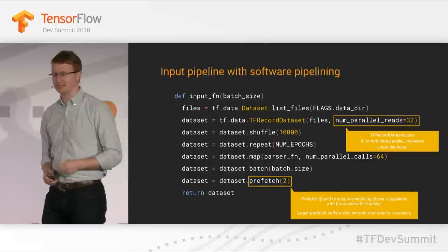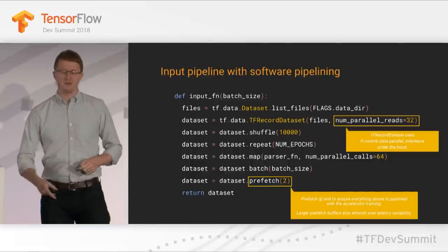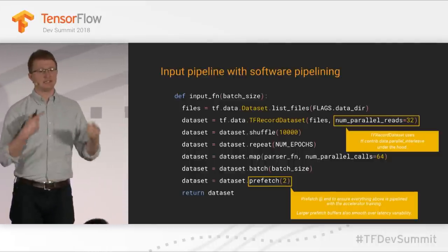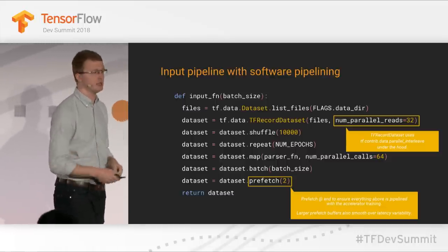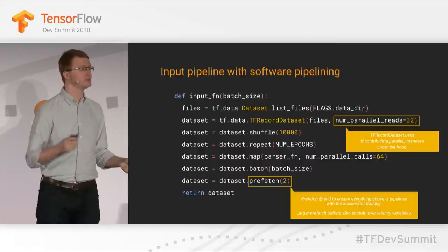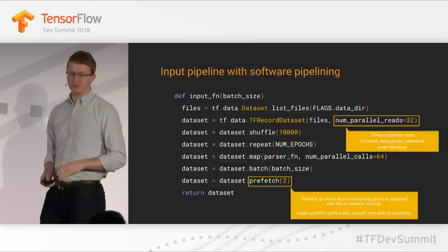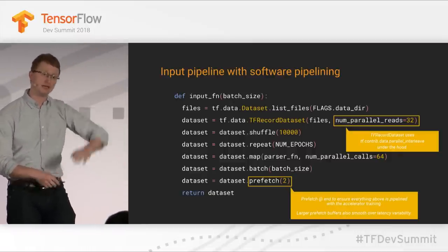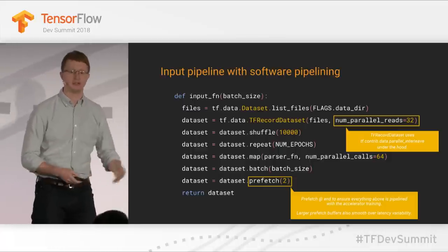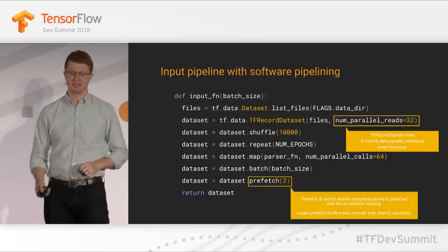How do you enable software pipelining with datasets? It's actually very easy. You set num_parallel_reads equal to 32, and underneath the hood tf.data is automatically using parallel interleave, which is a key dataset transformation enabling software pipelining. The other important change is to set prefetch equal to 2 right at the end, which ensures that everything above is pipelined with everything below — your data transformations and extraction are pipelined from your loading into the accelerator.